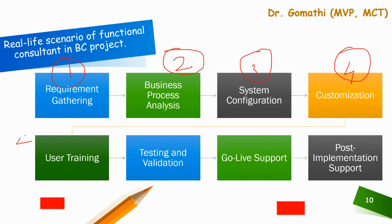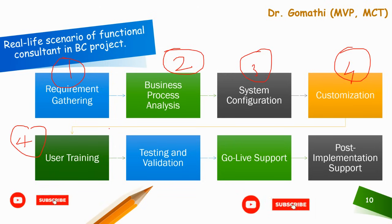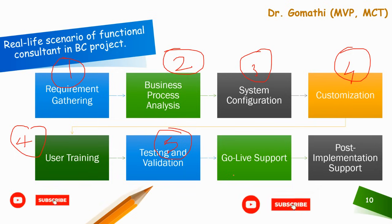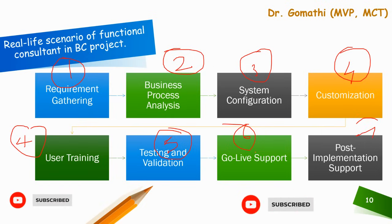The fifth phase is user training — you conduct comprehensive training sessions for the company's employees to ensure they understand how to use Business Central effectively in their daily tasks, maximizing system benefits and user adoption. Then comes testing and validation — collaborating with the client's team, you conduct rigorous testing to ensure Business Central is functioning as expected and meeting predefined requirements. The sixth stage is go-live support — during the system's go-live phase, you provide on-site support to assist employees in using Business Central and addressing any issues that arise. Post-implementation support — after successful implementation, you continue to provide support, addressing questions, additional training needs, or system adjustments as the business evolves.